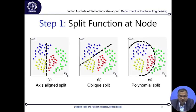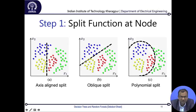Another kind of split can obviously be a polynomial — you can define a parabola, a curve, or an ellipse function to segregate different classes. Each type has its own beauty, merits, and demerits. With a polynomial split, you can very easily segregate the green class from the red, yellow, and blue. There are pros and cons in how we do this, which we will come to in subsequent steps.